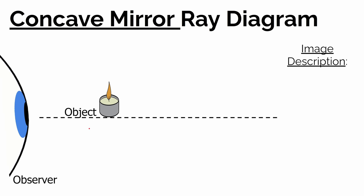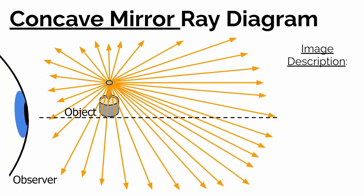Let's do a ray diagram. Imagine a tea light candle in front of a concave mirror, placed farther than the focal point. Light from the tip of the flame goes in all directions — it acts like a point light source. An observer traces those rays back and sees the candle flame where the light appears to originate. Now with a concave mirror to the right, we apply rule one: light from the top of the flame traveling parallel to the principal axis bounces off and must pass through the focal point.